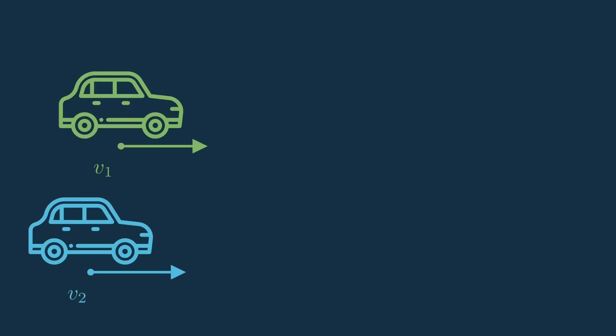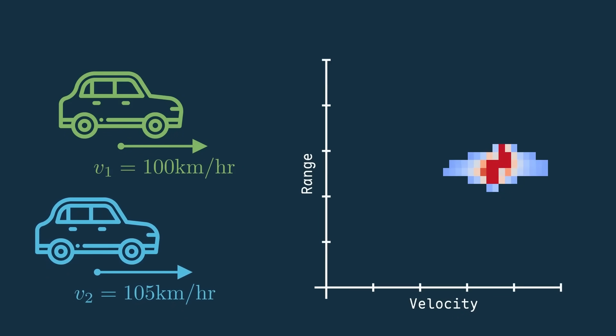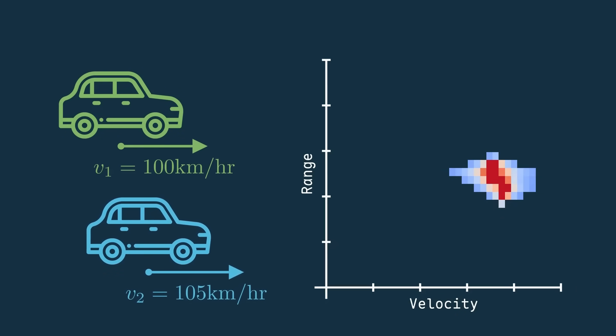For example, if one car was moving at 100 kilometers per hour and another at 105 kilometers per hour, can the radar tell that there are two different speeds, or will it just show up as one average Doppler blur?